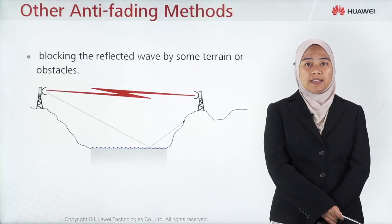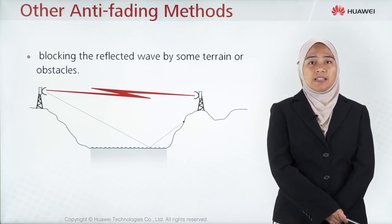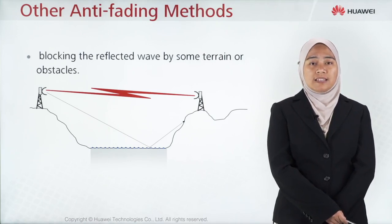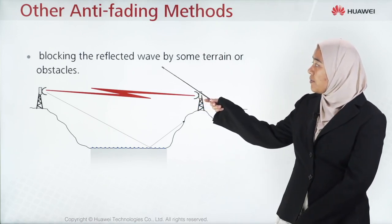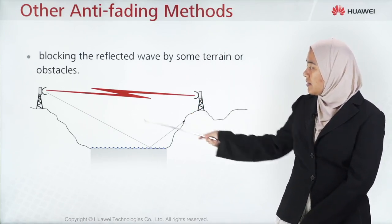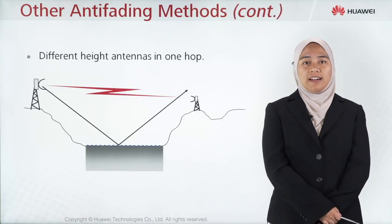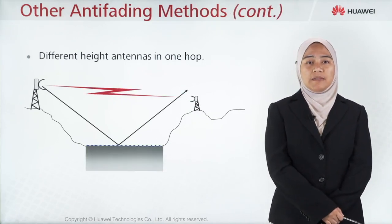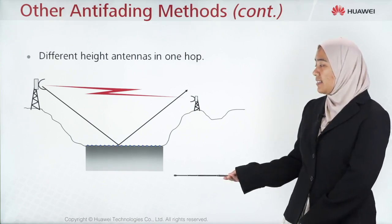For other anti-fading methods, we can use additional techniques depending on the situation or location. For example, blocking the reflected wave using terrain or obstacles at different heights. Another anti-fading method is using antennas at different heights in one hop, as shown in this diagram.